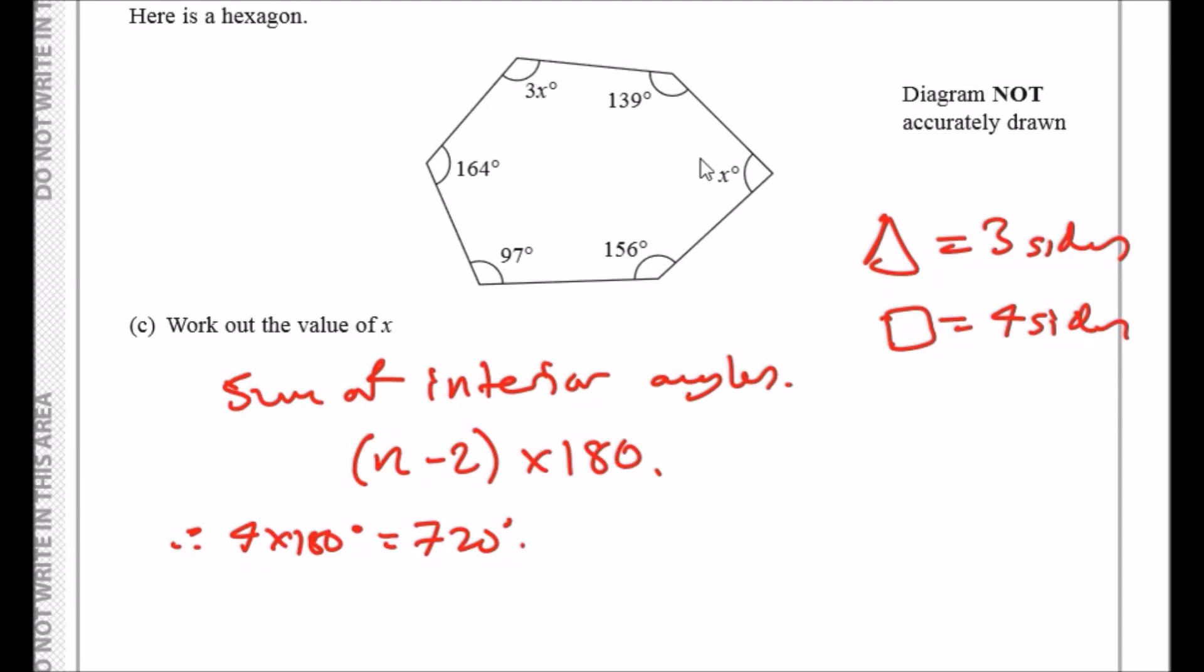Let's work out the sum. We've got 3x plus x is 4x degrees. Now let's add up all these numbers: 139 plus 164 plus 97 plus 156.